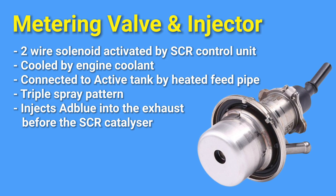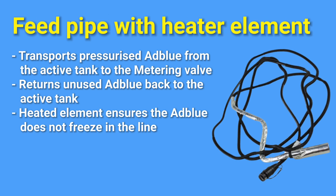The SCR metering module includes an injector and a cooling system, with the cooling function serving to minimize the transfer of exhaust gas heat to the injector. The injector is a two-wire solenoid that operates via a clock signal from the SCR module. The feed pipe transports pre-charged AdBlue from the active tank to the metering valve. When the vehicle is switched off, residual AdBlue within the feed pipe is sucked back into the active tank to prevent contents from freezing in cold ambient temperatures. The heater element is a simple two-wire element that can be checked with an ohmmeter should it fail internally.